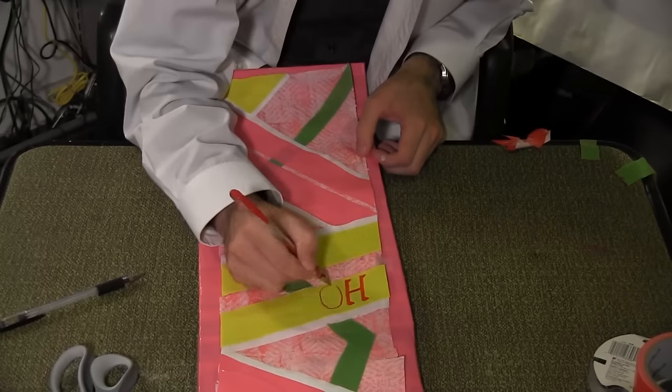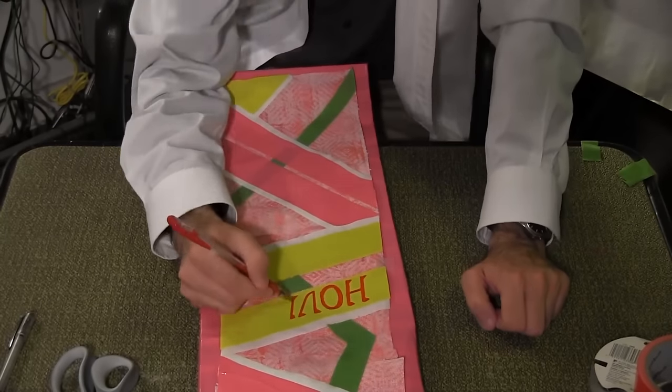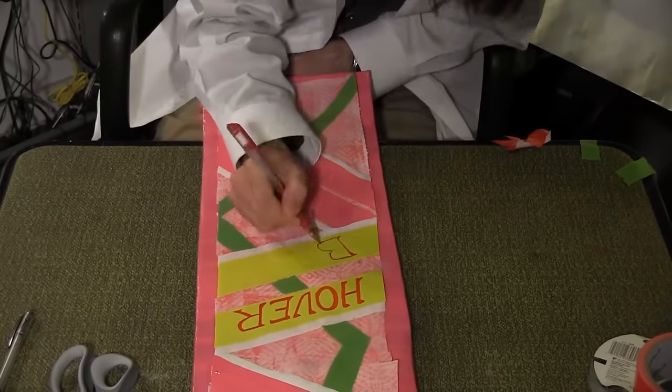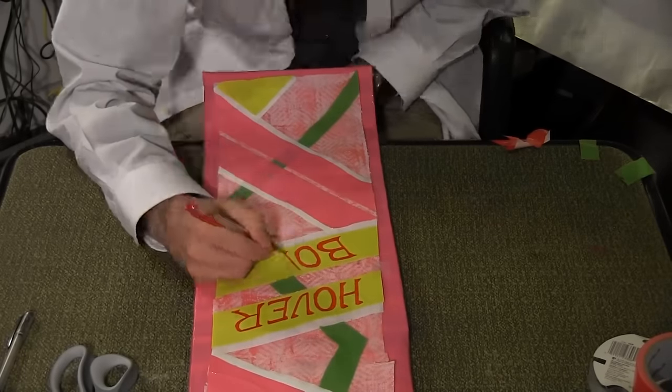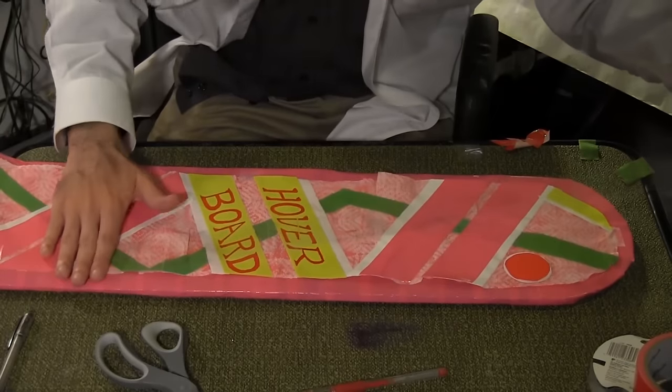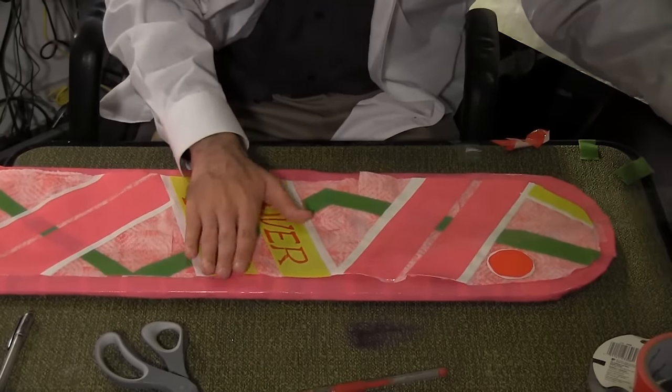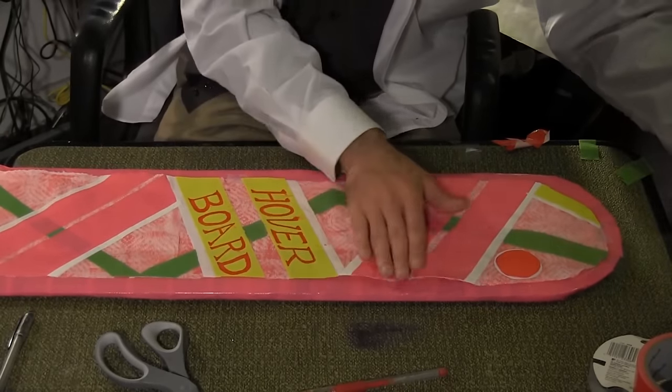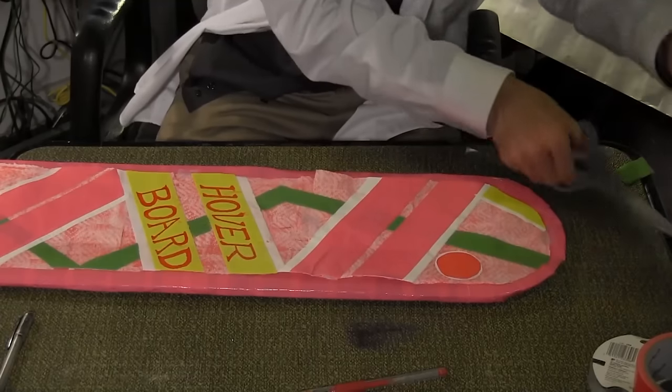Draw the words hoverboard onto the two central yellow pieces in red ink. Be careful not to let the ink smear. Cover the entire board in clear packing tape. Be mindful of the ink and don't smear it as you lay down the tape. Cut away any excess tape.